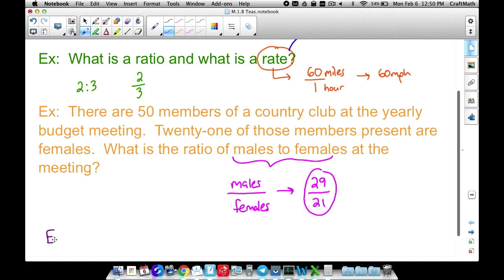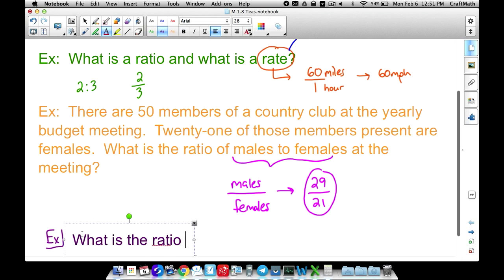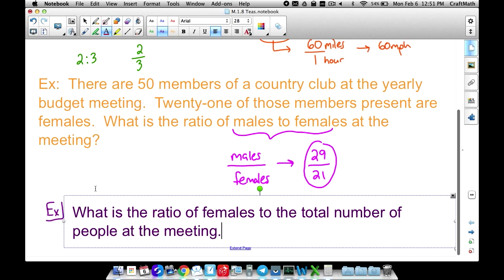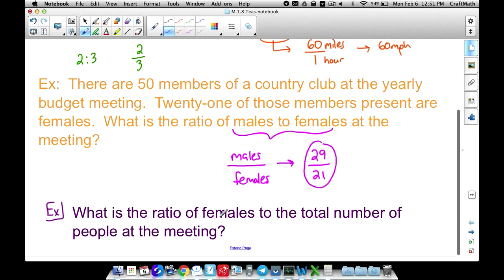Let me go ahead and give you another example though from this same problem. Suppose we wanted to find what is the ratio of females to the total number of people at the meeting. So what's the ratio of females to the total number of people at the meeting? Well, we know that there are 21 females to the total number of people at the meeting. So that would be 21 to 50. Notice we're finding two different ratios. This ratio here was males to females. This one is females to the total number of people at the meeting. So two different examples that revolve around the same question. So make sure you read that sentence carefully when you're trying to find a ratio on the TEAS test.